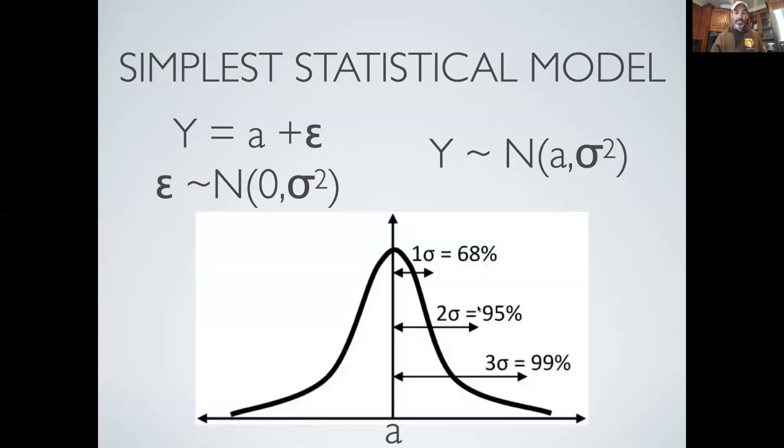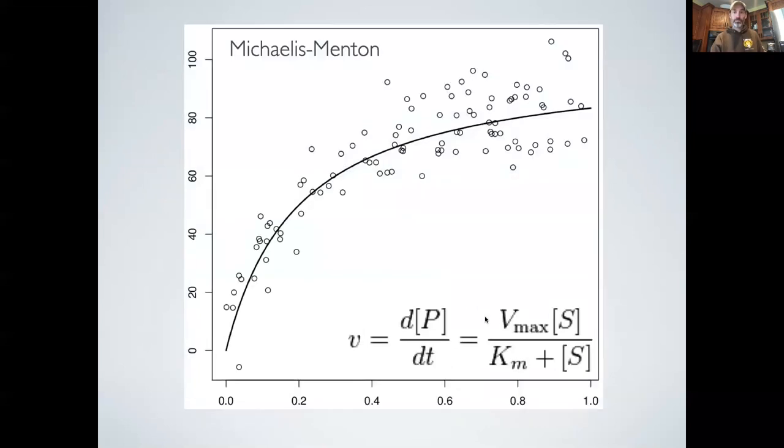So this is a graphical representation of what our model actually is. It says that there's some mean value a with some variability around it, explained by sigma.